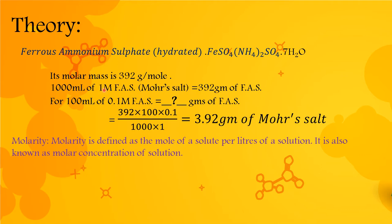1000 ml of 1 molar ferrous ammonium sulphate requires 392 grams. If we want to make a 1 molar solution in 1000 ml, we need 392 grams of ferrous ammonium sulphate. For a 0.1 molar solution in 100 ml, we do cross multiplication: 392 × 100 × 0.1 divided by 1000 × 1, which gives us 3.92 grams of ferrous ammonium sulphate.